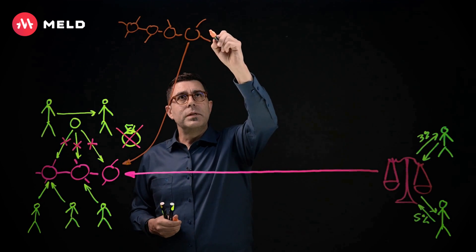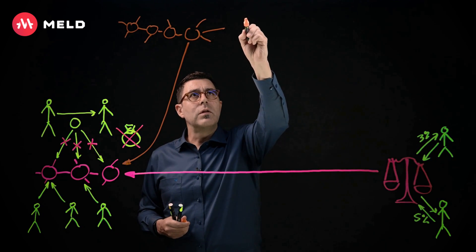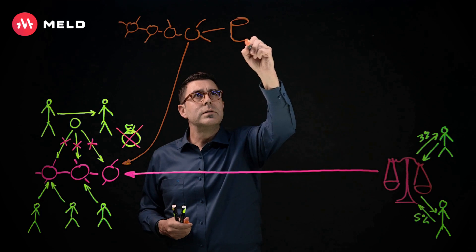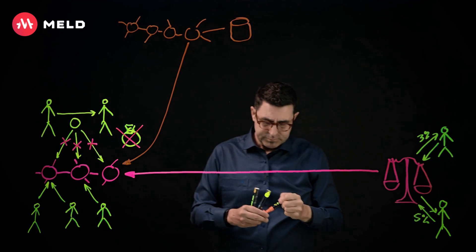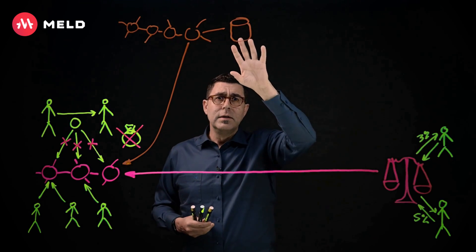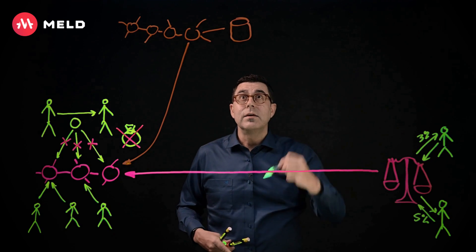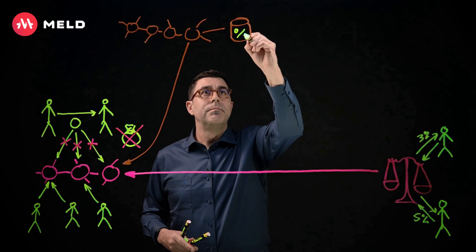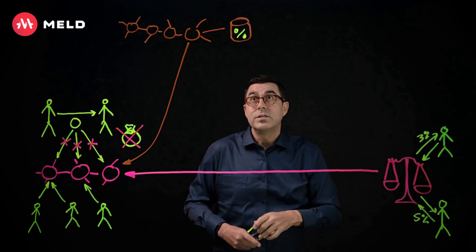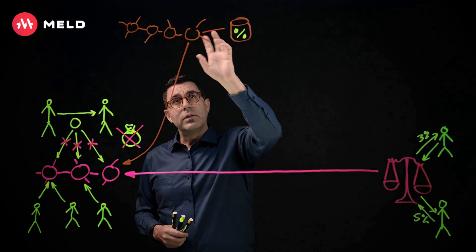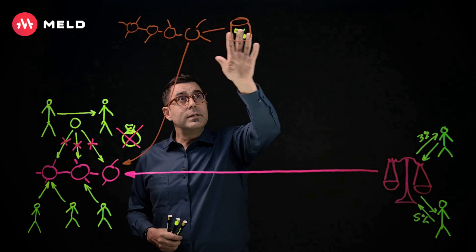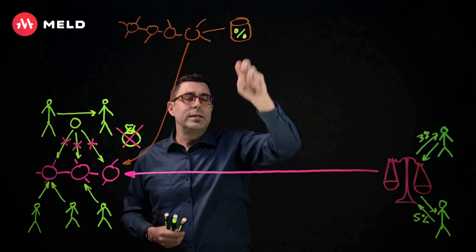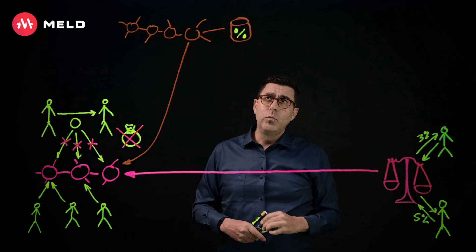But we've also done something here that's a bit different, where once you actually bridge, then the asset that's normally locked, we still lock it, but we lock it into a native stake pool. And that native stake pool generates a yield. So in the case of Ethereum or Avalanche or Cardano, you put it into the native staking and it generates a yield.